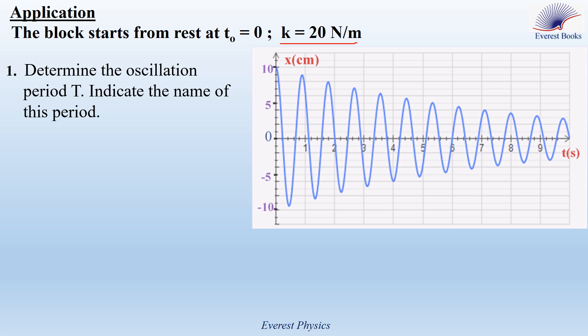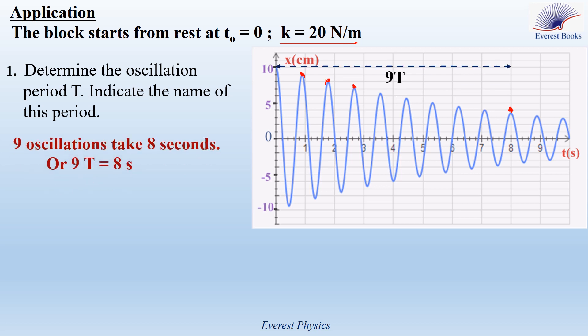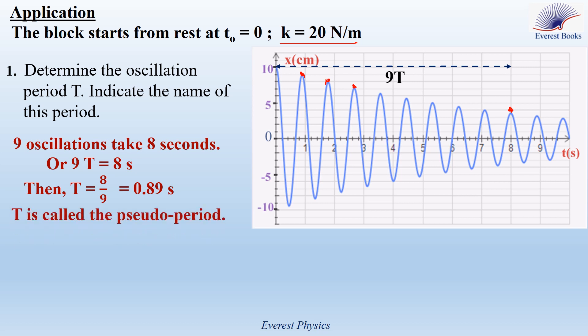Looking at the graph, here is the end of the first oscillation, the second, the third, and the ninth oscillation. As you see, nine oscillations extend over eight seconds. Then the period T is equal to 8 over 9, which equals 0.89 seconds. The name of this period is the pseudo-period of oscillation.